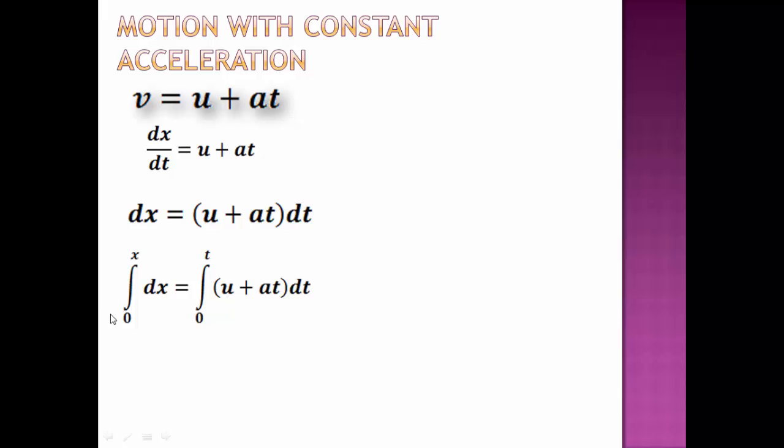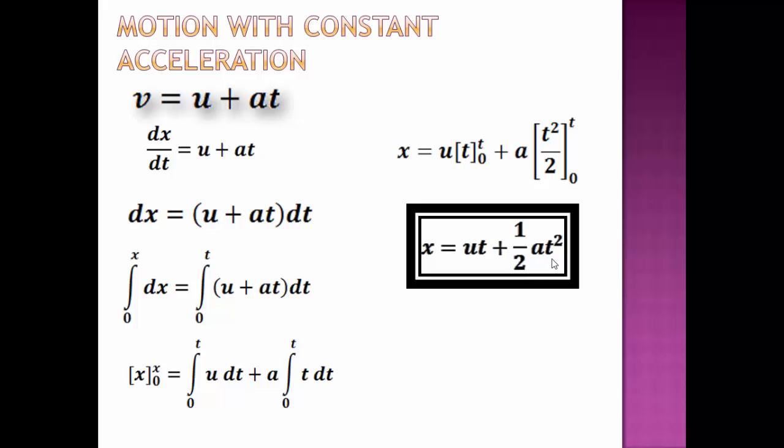Integrating on both sides. On the left side the position change from 0 to x in the time duration 0 to t. Integration of dx will be x on the right side. Since there is a plus sign we can apply integration individually to both the terms. So integration from 0 to t of u dt plus a integration 0 to t of t dt. a is constant also u is a constant. So x will be equals to u integration of t plus a. Integration of t dt is t square by 2. Applying the limits we get x equals to u t plus half a t square.